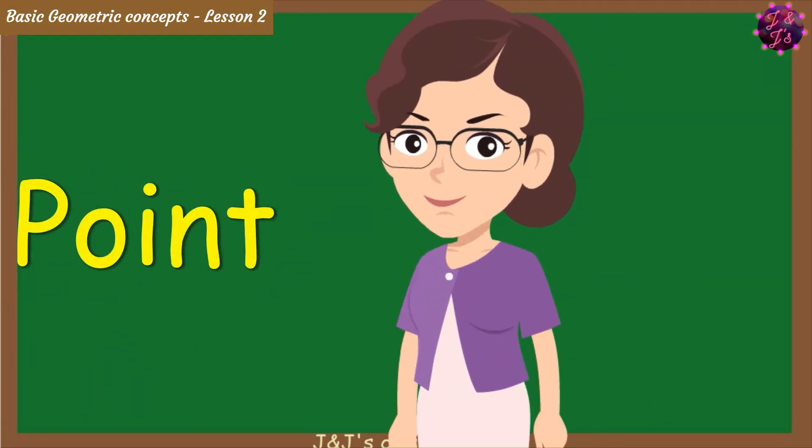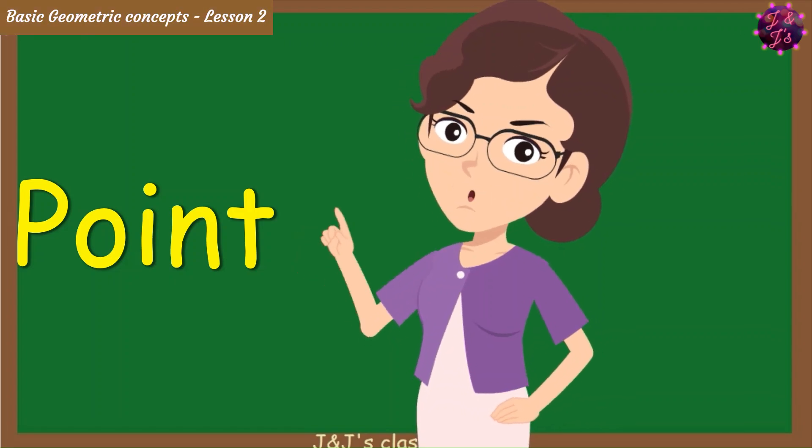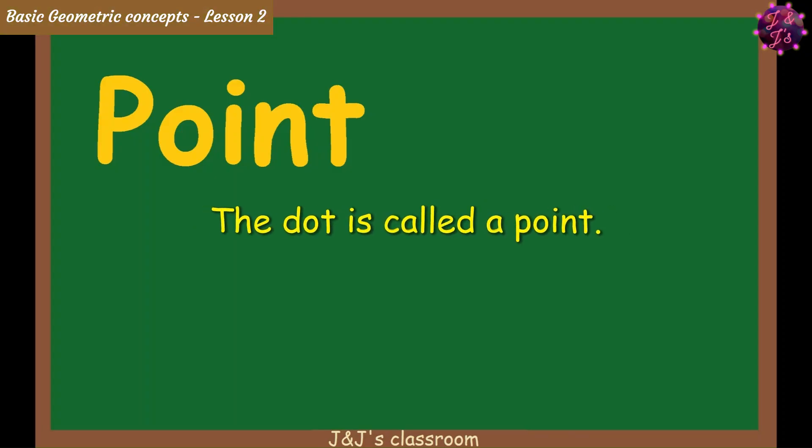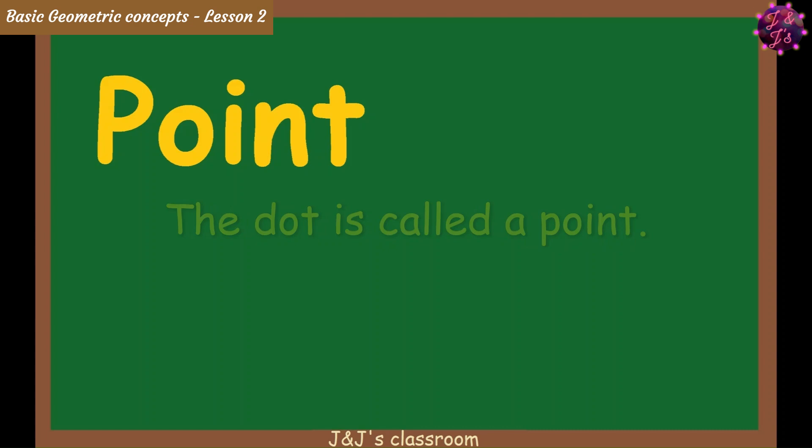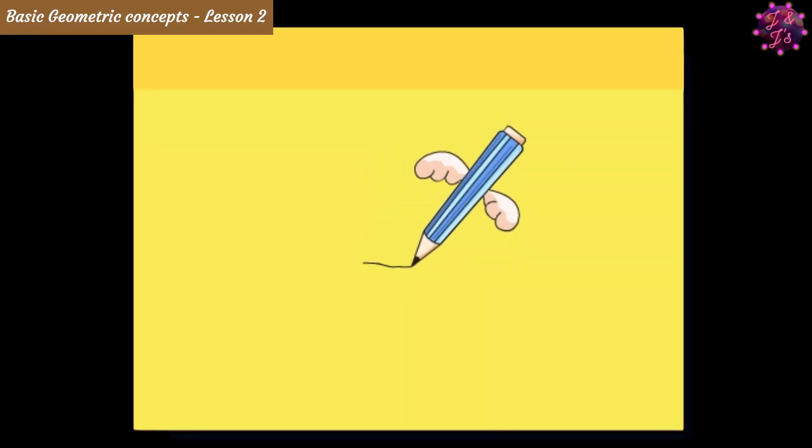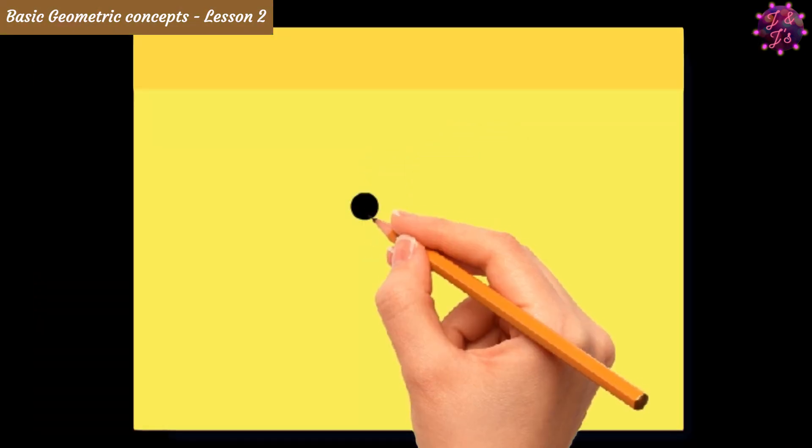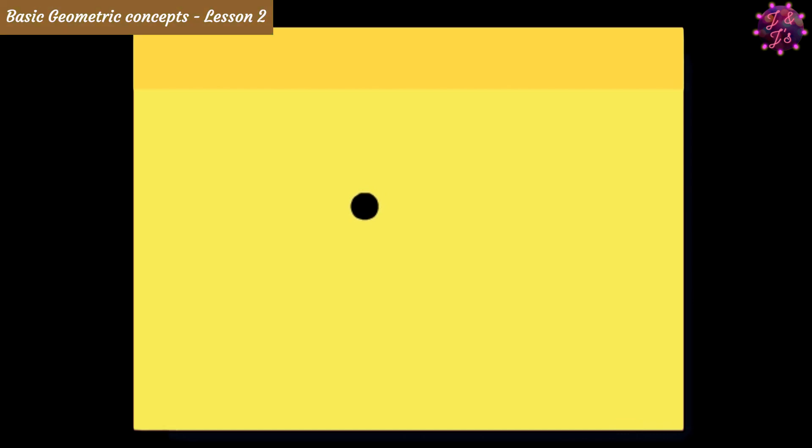Ok. Let's begin with point. The dot is called a point. Please take an unruled paper and pencil. Now make a dot on it with a pencil. This dot is called point.